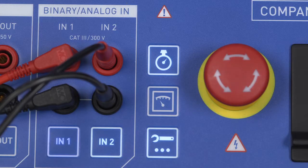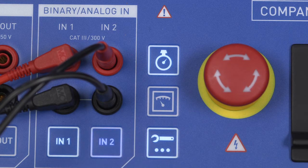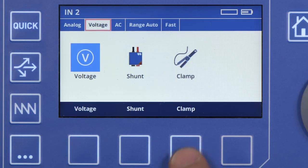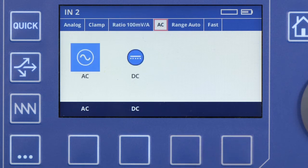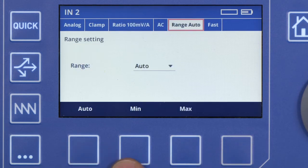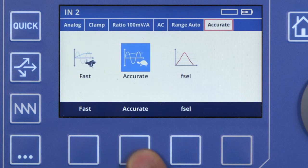Configure IN2 as a current input by pressing the IN2 key and subsequently pressing the Analog, Clamp, 100 millivolts per amp, AC, Auto, and Accurate keys.